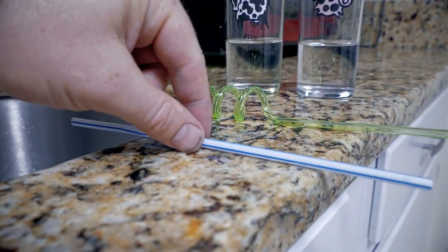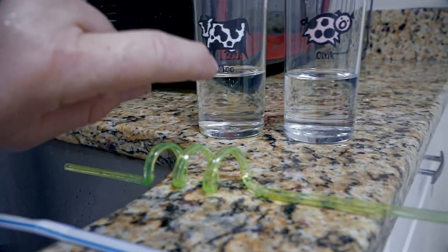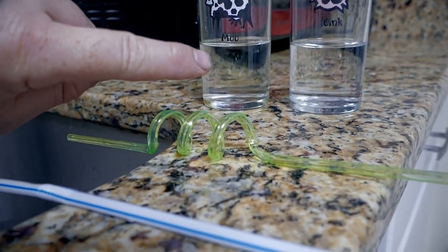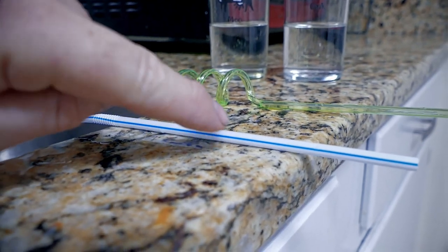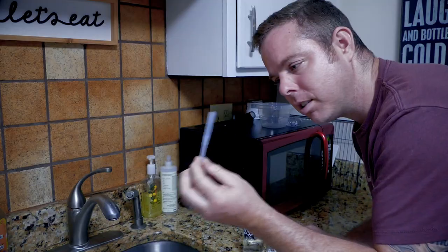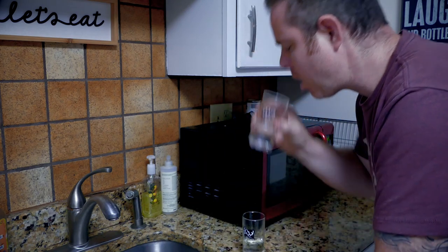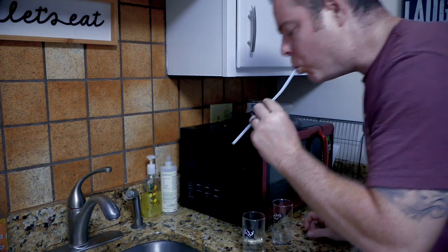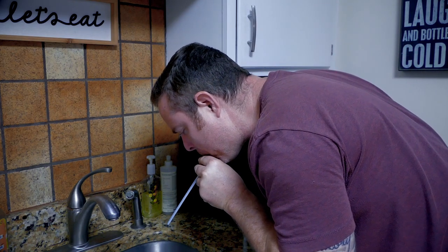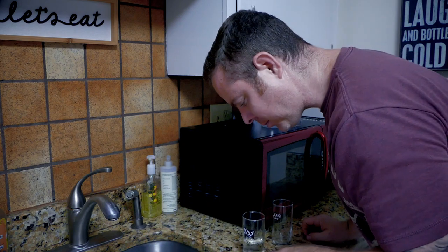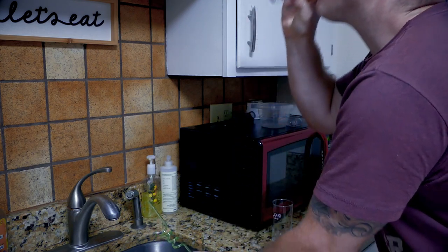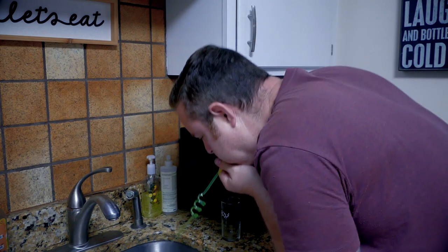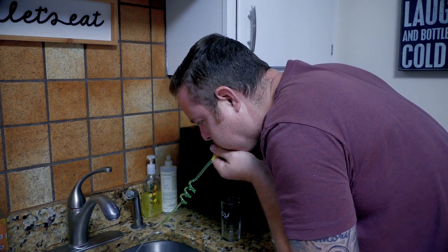All right, what do we have here is a very simple Bill Nye the Science Guy little experiment. I got two glasses of water with the same amount of water. I'm going to blow it through this one, and I'm going to blow it through this one, and you'll see how this one's more restricted, and this one it pretty much gets by this straw very fast. Straight straw, bigger diameter. Done. Skinny straw. More bends. A lot more back pressure.